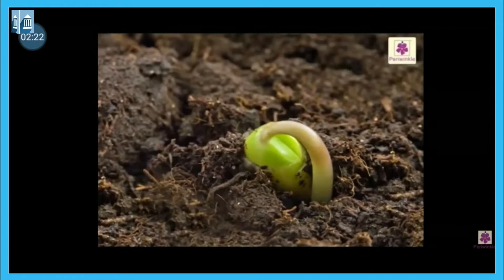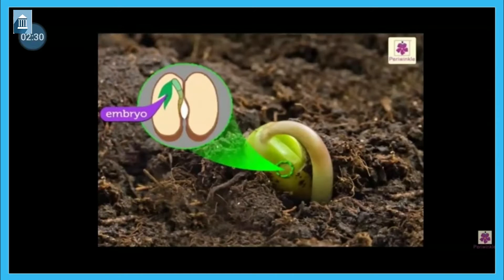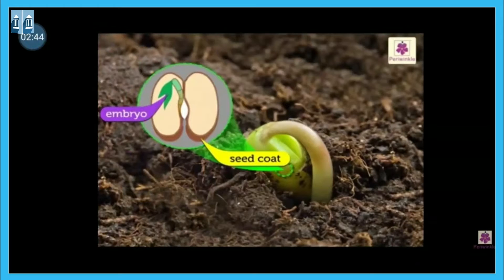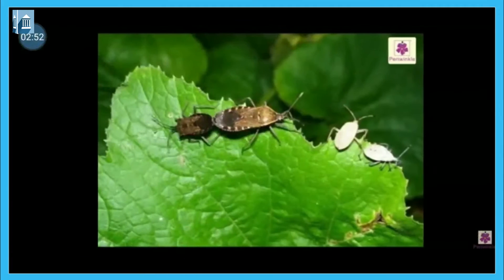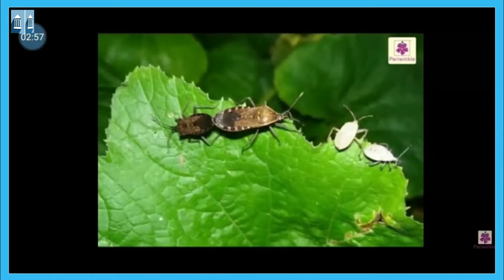Now let us understand what is inside the seed — the structure of a seed. There are two parts inside the seed. First, there is a baby plant inside the seed. This baby plant is called the embryo — it will grow into a bigger plant. Another part is the seed coat. So there are two parts inside the seed: one is the embryo and the other is the seed coat. The seed coat protects the embryo from insects.